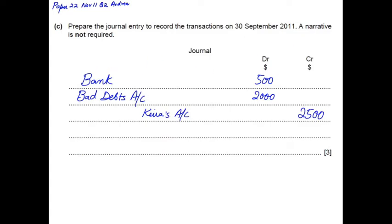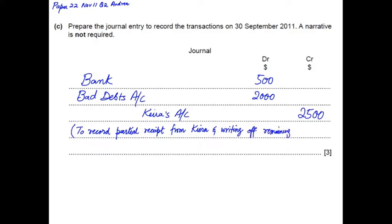The examiner said narrative is not required, but if it were required, the narrative would be: 'To record partial receipt from Kira' — partial receipt means we haven't received the full amount — 'and writing off the remaining balance as bad debt.' That was the journal entry for this requirement.